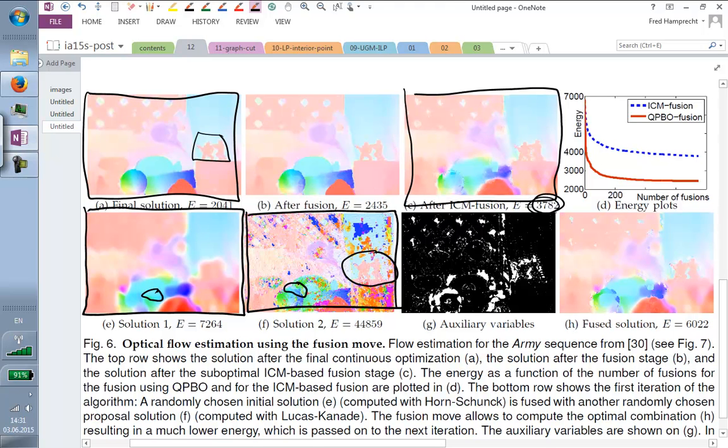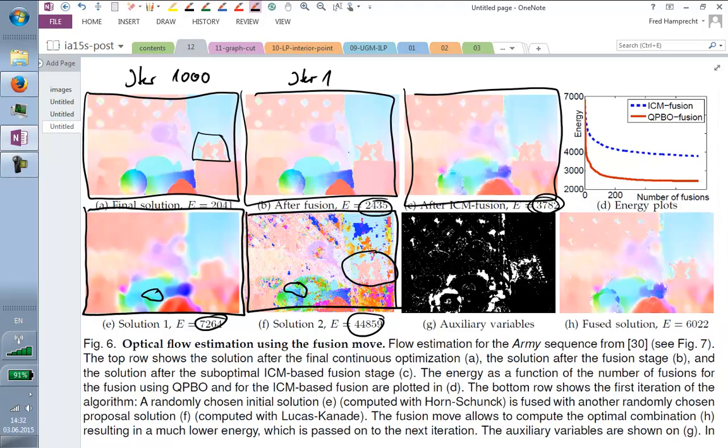And in fusion moves, we now take these two candidate solutions and then decide in each and every pixel which of the solutions we want to use. And the trick is to formulate this again as a graph cut optimization problem. And now, here is a naive way of fusing, which gives OK-ish results. This has, in terms of the auxiliary random field that we're setting up and trying to solve, it has an energy which is much, much lower than the energy of either of the candidate solutions.